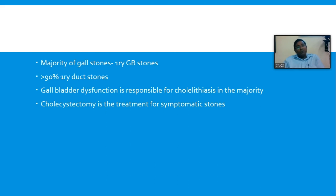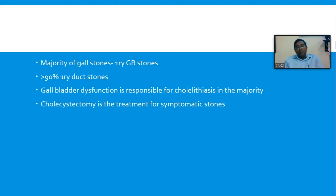More than 90% of stones are primary gallbladder stones. Very rarely you get stones in the duct system without having stones in the gallbladder. Most stones you come across in the biliary tree and common bile duct originally originated in the gallbladder and passed into the duct system. So primary duct stones are not that common. This indicates the gallbladder is the culprit, and gallbladder dysfunction and sphincter dysfunction are responsible for formation of gallstones in the majority.